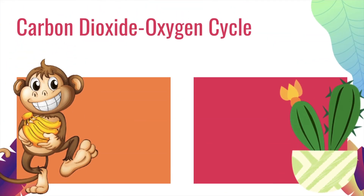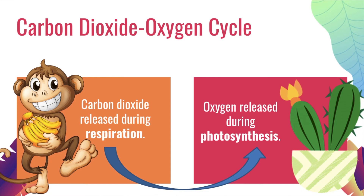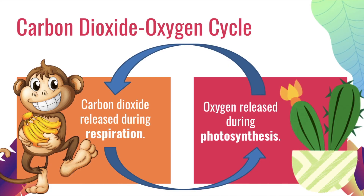The carbon dioxide oxygen cycle: carbon dioxide is released during respiration as we breathe, and then oxygen is released during photosynthesis. We benefit by breathing in the oxygen, and plants benefit by having the carbon dioxide they need in the photosynthesis process.